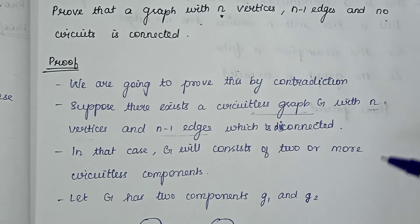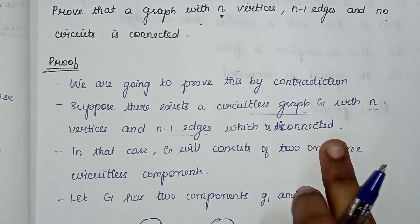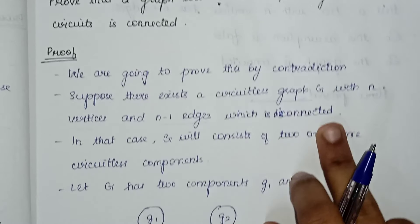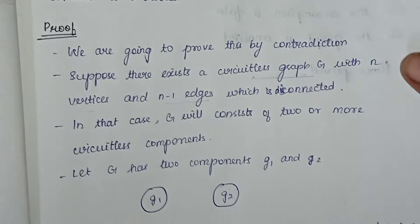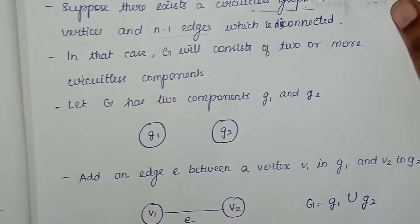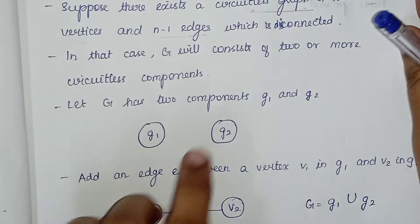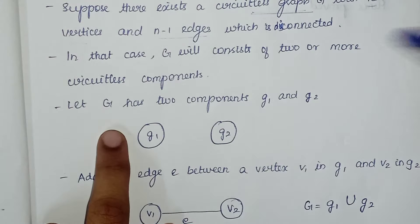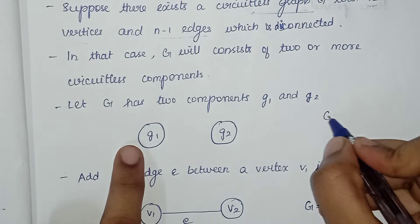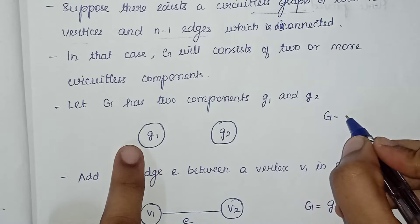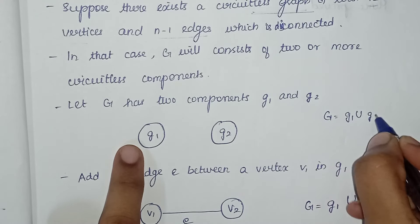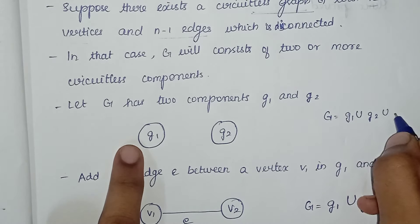So now we have circuitless components. We have two components G1 and G2. G is equal to G1 union G2 union G3, and so on. Now G1 and G2 are connected. When we have connected components, this graph is considered connected.